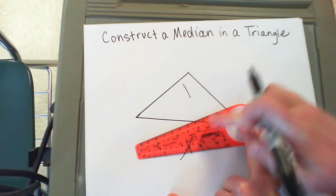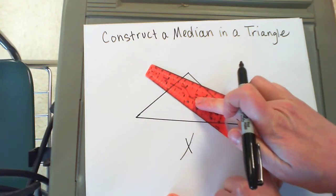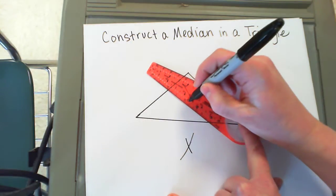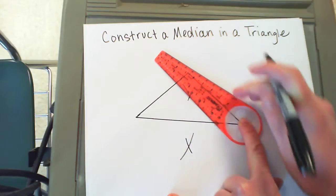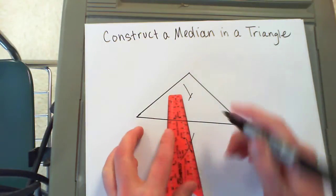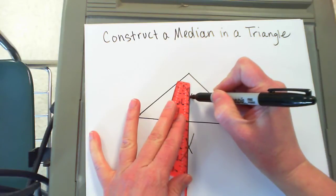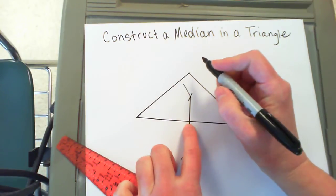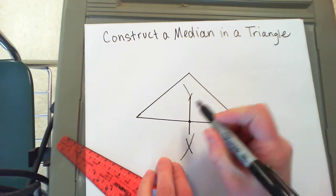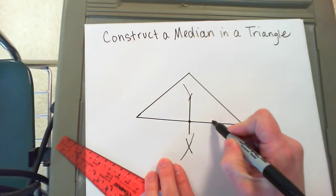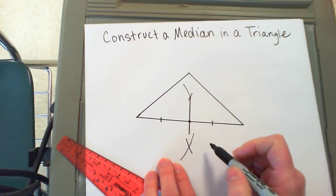You make sure that they connect down at the bottom and that they cross up at the top. You connect the two of them to draw in your perpendicular bisector. So this point right here is your midpoint of this side, so those two pieces are congruent.